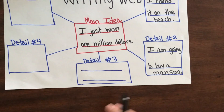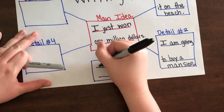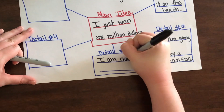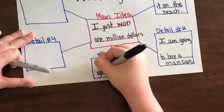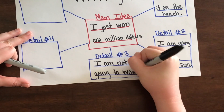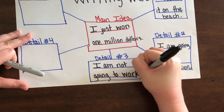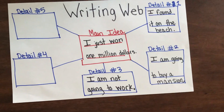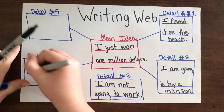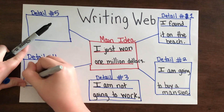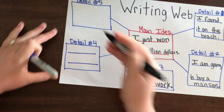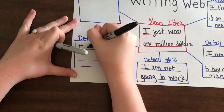Detail Number Three: what am I going to be doing if I have a million dollars? 'I am not going to work' — which means you might have to find a new teacher! And actually for that break, I'm probably going to go on a vacation. So: 'I am going on a vacation.' I don't know where yet, but I know it's going to be beautiful.